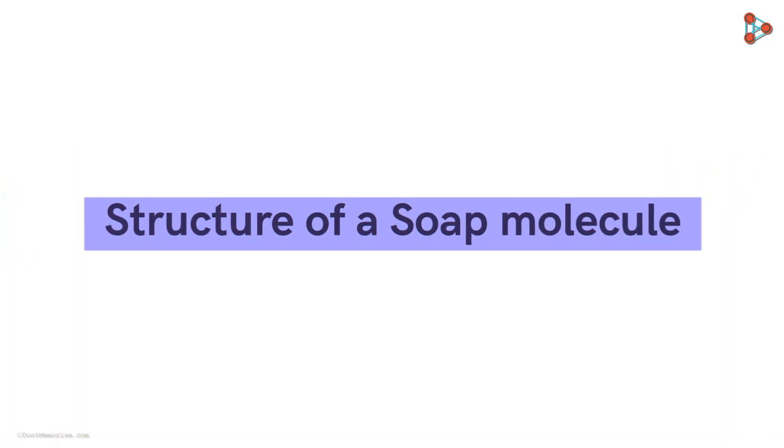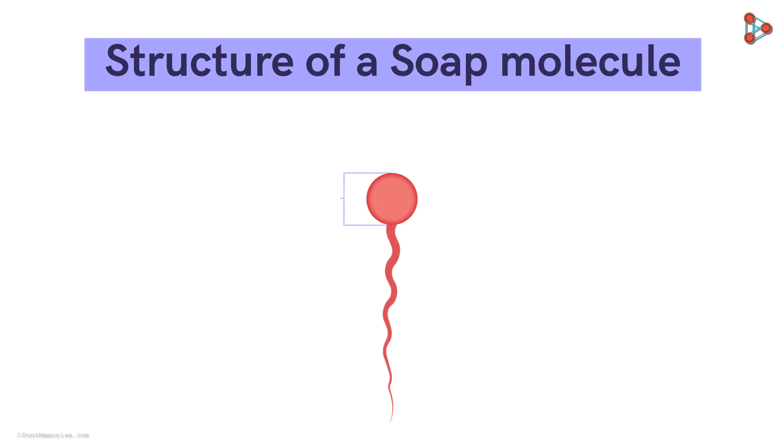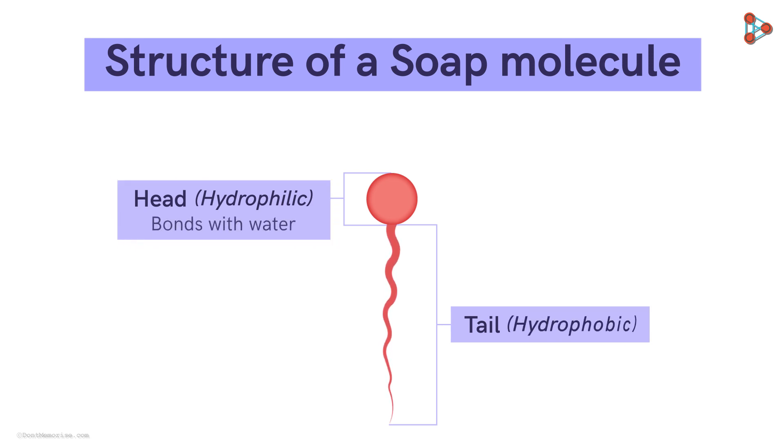The structure of a soap is made up of molecules. Each molecule has a head and a tail. The head is hydrophilic, which means it readily bonds with water. And unlike the head, the tail is hydrophobic, which means it's averse to water. It prefers oils and fats.